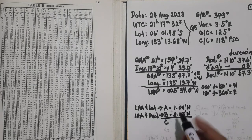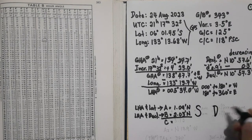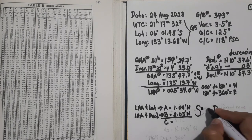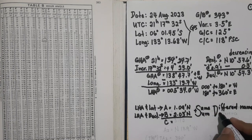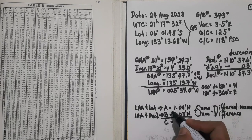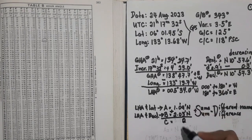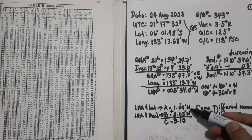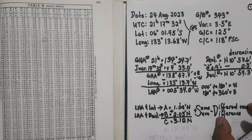After that, we can find our C. To find C, we apply the S or D rule: S means same name — find the sum (add); D means different name — find the difference (subtract). Since A is north and B is north — same name — we add them: 1.09 plus 2.03 equals 3.12. Copy the common name — direction is north. So the value of C is 3.12 north.